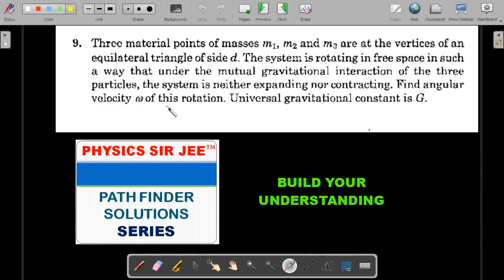Find the angular velocity omega of this rotation and universal gravitational constant is given as capital G. In case you have not tried this question before, it's a nice simple question right at the JE advanced level. Please make sure you give it an attempt and then go ahead with the solution that I'm going to give.